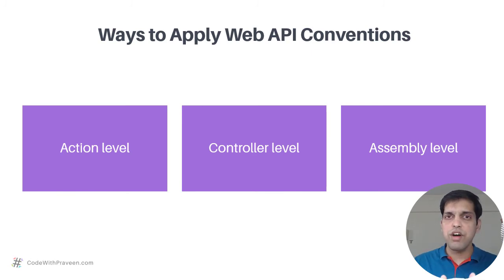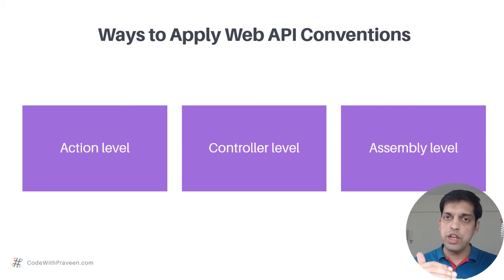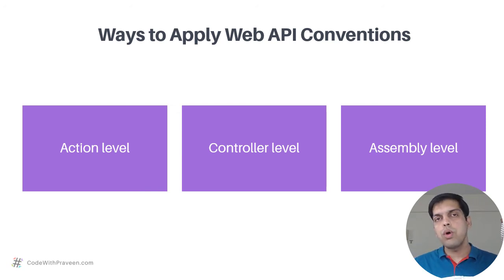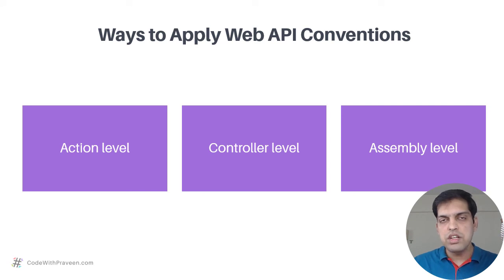Let's look at the different ways of applying Web API Conventions to your API projects. There are three different approaches. The first is to apply at the individual action level, where you apply the convention to each individual action method within each controller, giving you full control over which action methods receive these conventions. The second approach is to apply at the controller level, where the convention gets applied to all action methods within that particular controller.